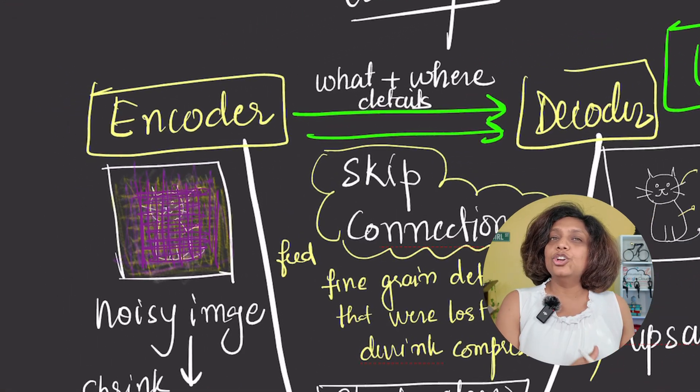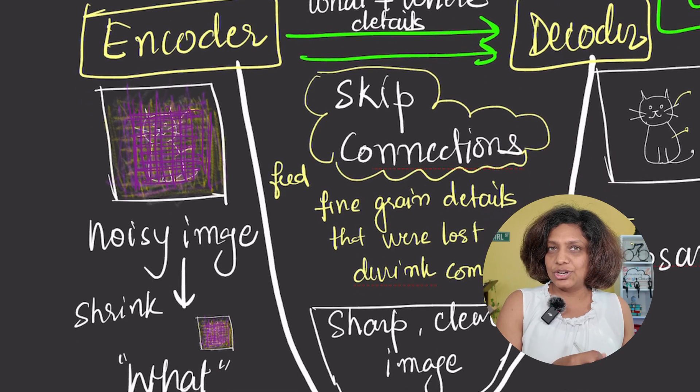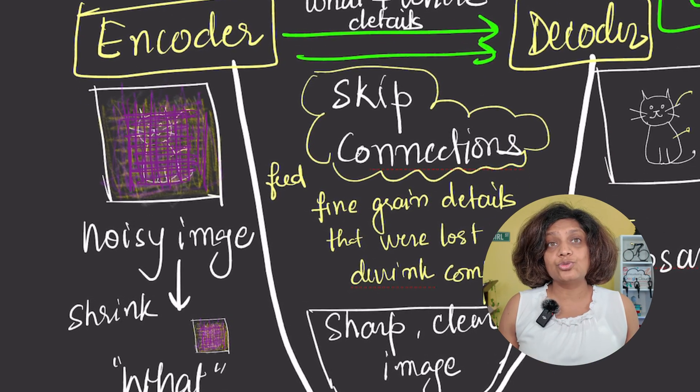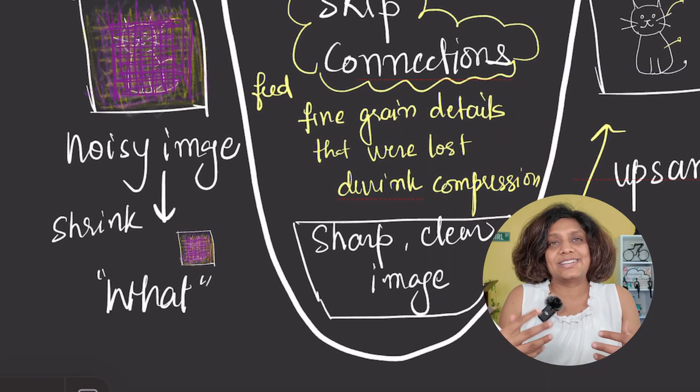The U-net gets its name from its distinctive U-shape. On the left side, the encoder takes the noisy image and shrinks it down, capturing the high-level contextual information—the 'what' of the image.